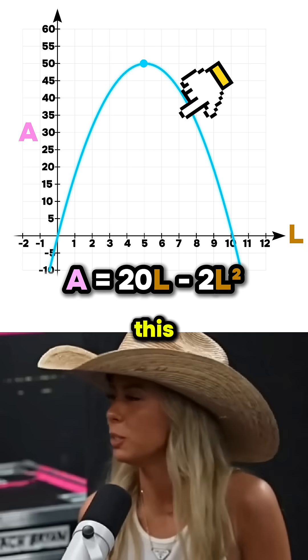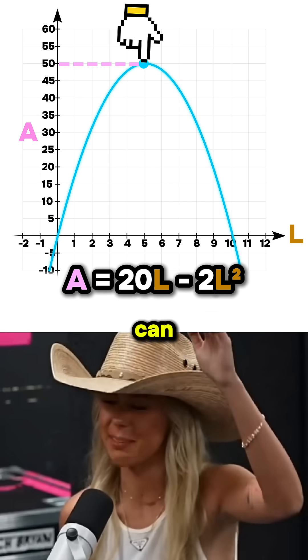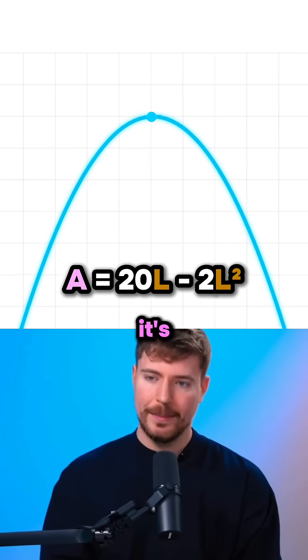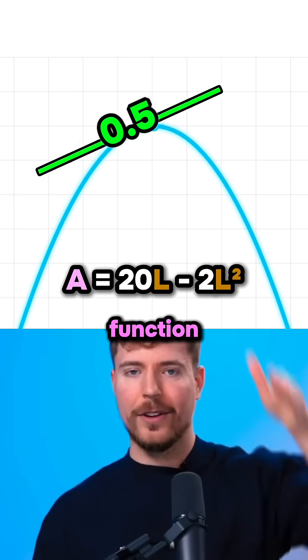So to maximize the area, we want to find this point up here where area is as big as can be. Hayley, we both know that's called a maximum, and it's basically where the derivative of our area function is equal to zero.